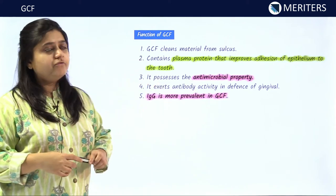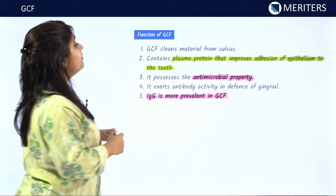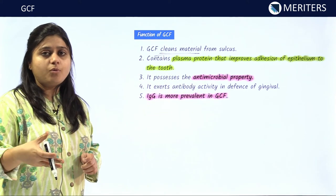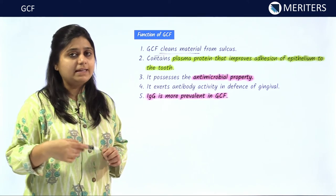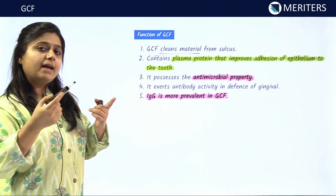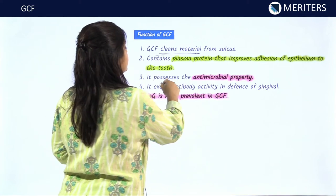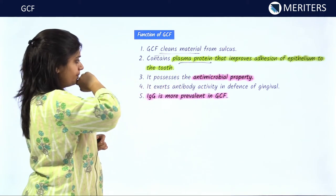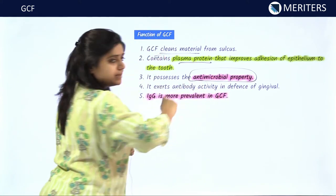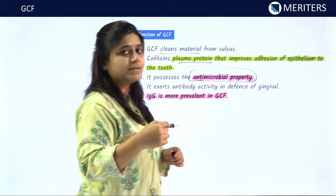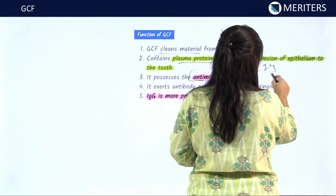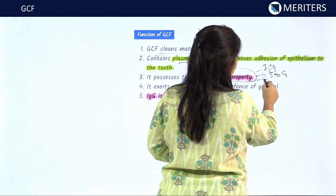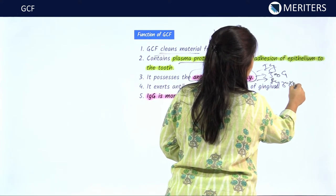The functions of GCF: GCF cleans materials from the sulcus — waste products such as urea and bacterial waste products are released into the oral cavity with the help of GCF. GCF contains plasma proteins that improve the adhesion of epithelium to the tooth. It possesses antimicrobial properties through various immunoglobulins — the dominant immunoglobulin is IgG — and also possesses lysozyme, which is responsible for the defense mechanism.